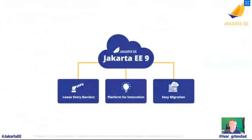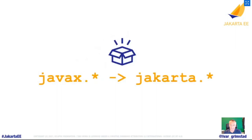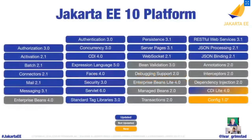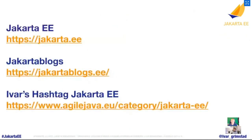To sum up: Jakarta EE 9.0.1 is available — it lowers entry barriers, is a platform for innovation, and makes migration fairly easy. The namespace change is happening whether you like it or not; if you're using Jakarta EE (or think you're not), you'll need to make the switch sooner or later. Jakarta EE 10 platform is shaping up and will be released in Q1 next year. For all information, go to jakarta.ee — that's the one thing to take away. Thank you very much.